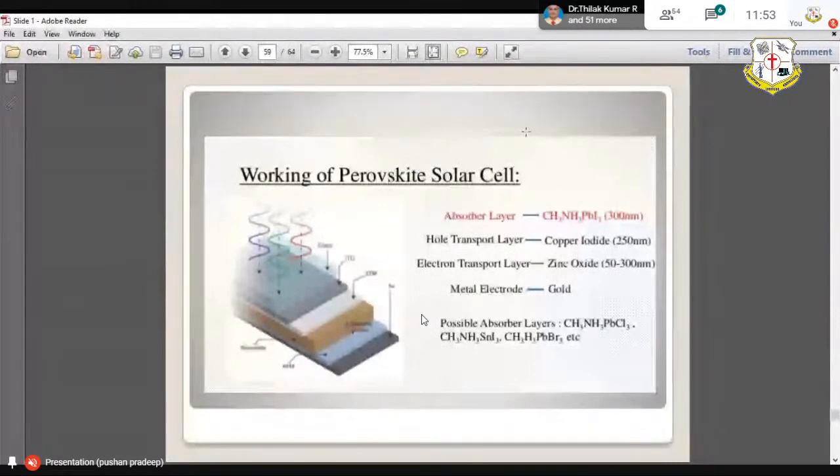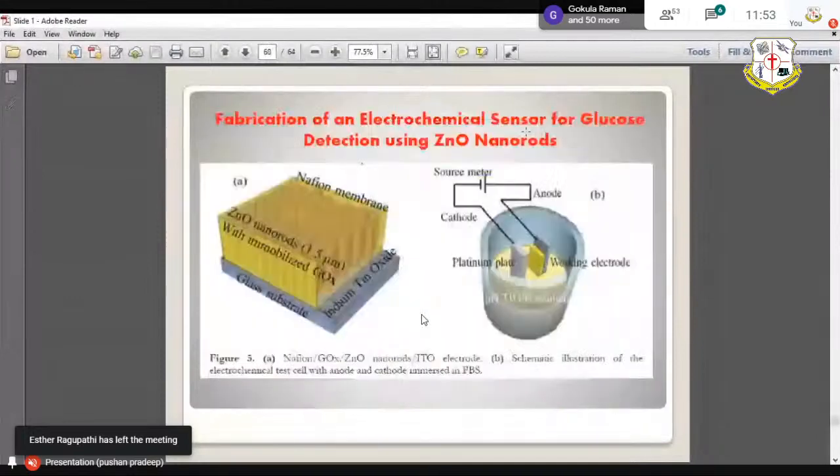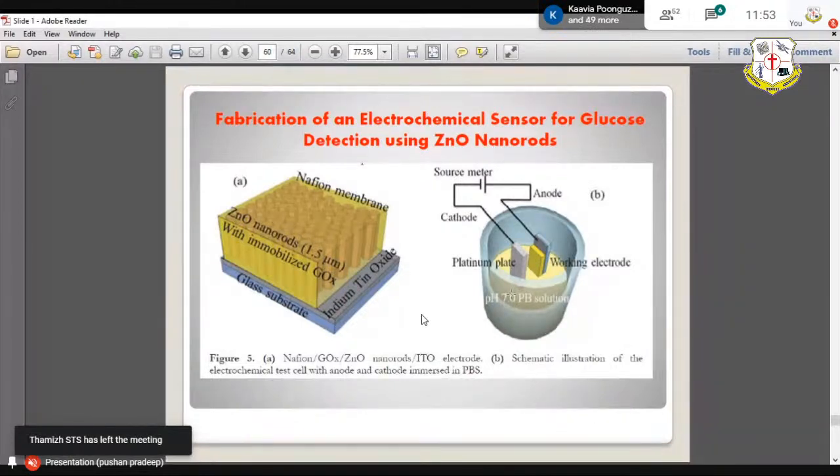It can be used as a sunscreen, it can be used as ointment, it can be used for cancer treatment, it can be used for solar cells, it can be used for even glucose detection sensors. This setup is the fabrication of electrochemical sensor for glucose detection using zinc oxide nanorod. This type of gas sensors are now available.